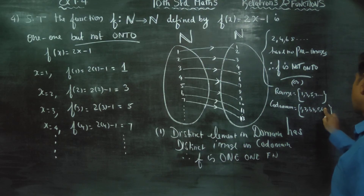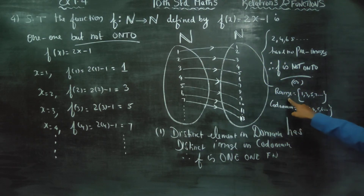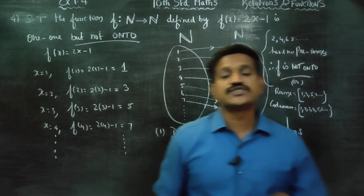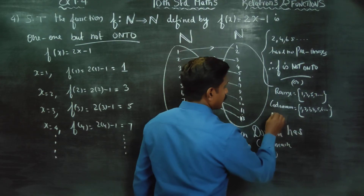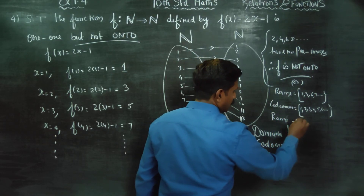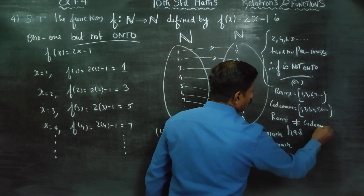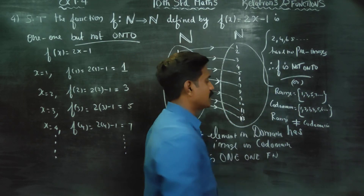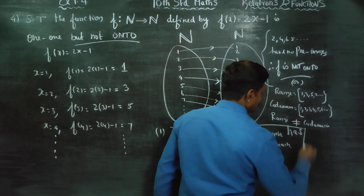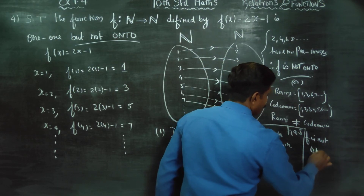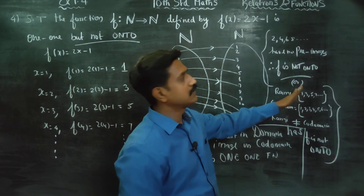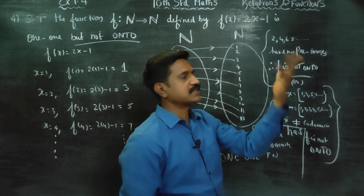The codomain is 1, 2, 3, 4, 5, 6... The range consists only of odd numbers: 1, 3, 5, 7... Range is not equal to codomain. Therefore, F is not onto.